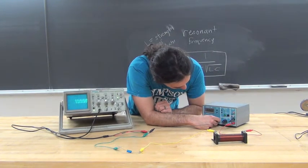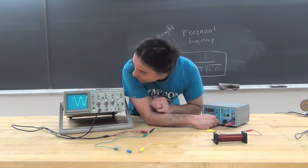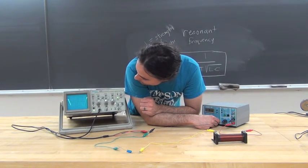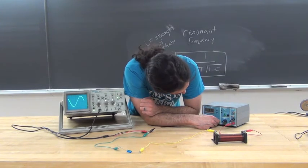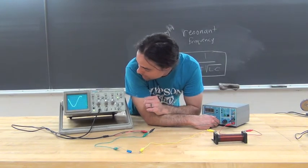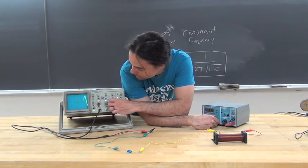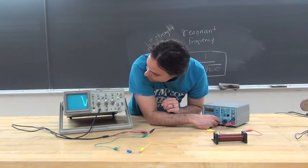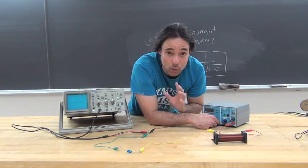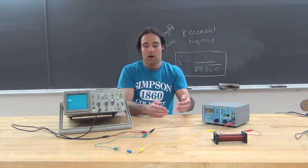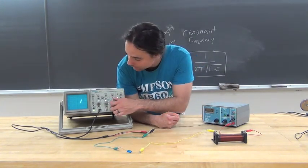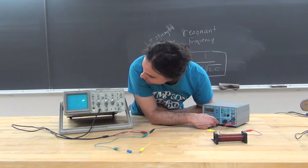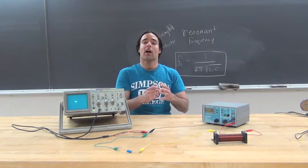I'm going down in frequency. Now we're at about 150 hertz, and you can see my amplitude has already gone up quite a bit. I keep going — it's still going up. Now it looks like it's starting to go back down, and I'm at 68 hertz, so I've just passed the maximum. I'm going to keep going down in frequency. You can see the graph doing two things: the period is getting larger as the frequency gets smaller, but the amplitude is also going back down. This is the phenomenon called resonance.